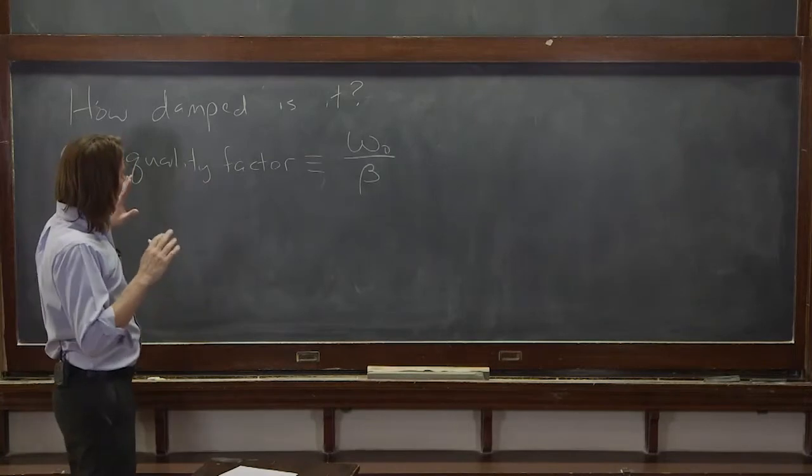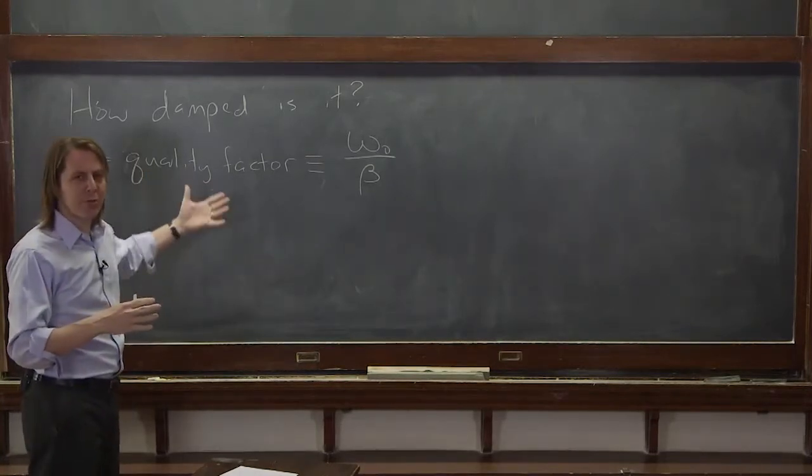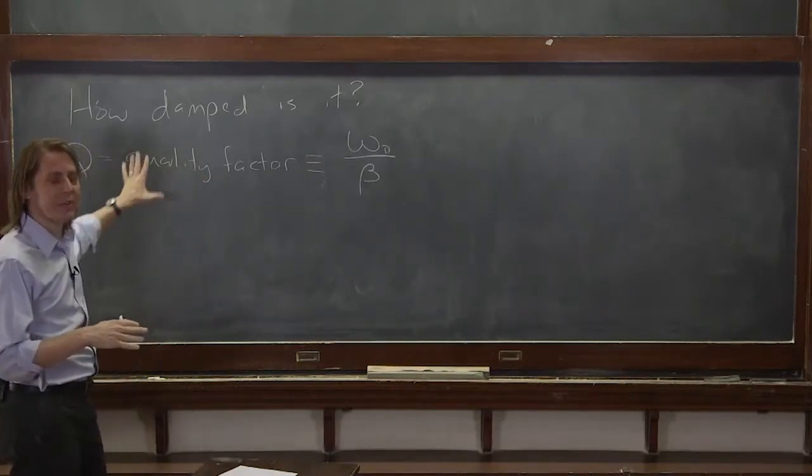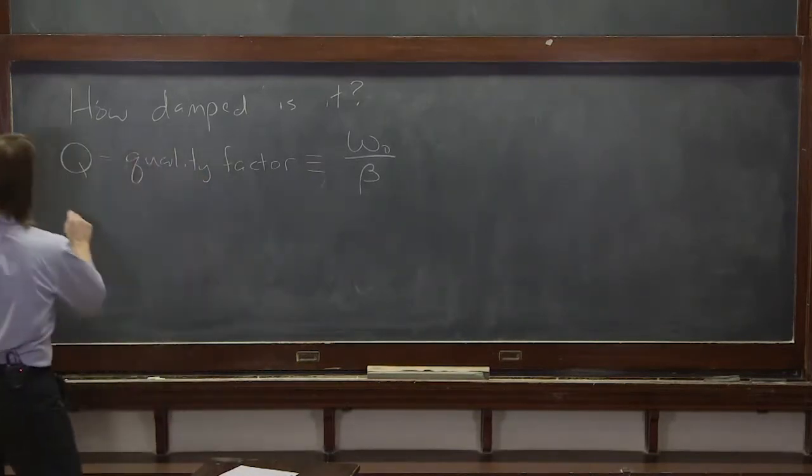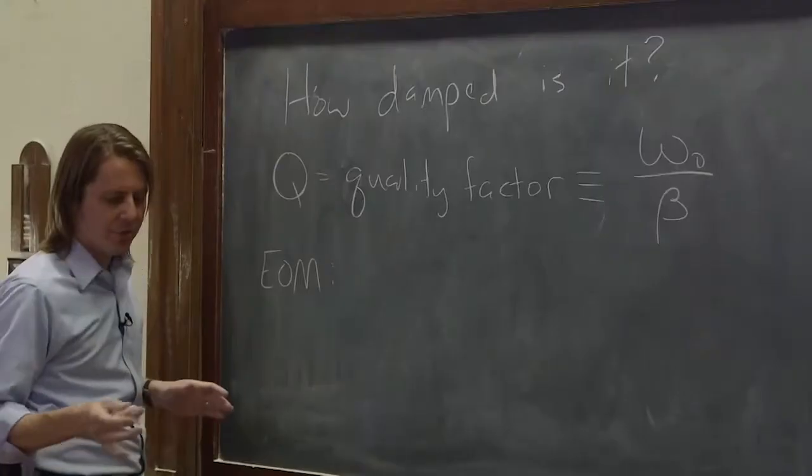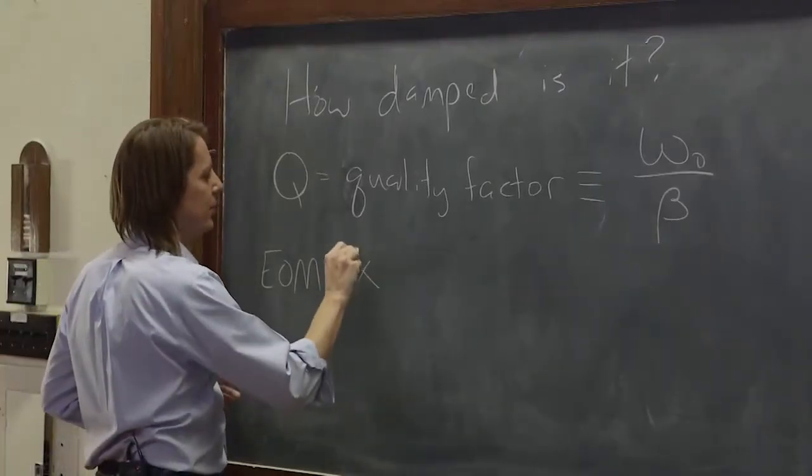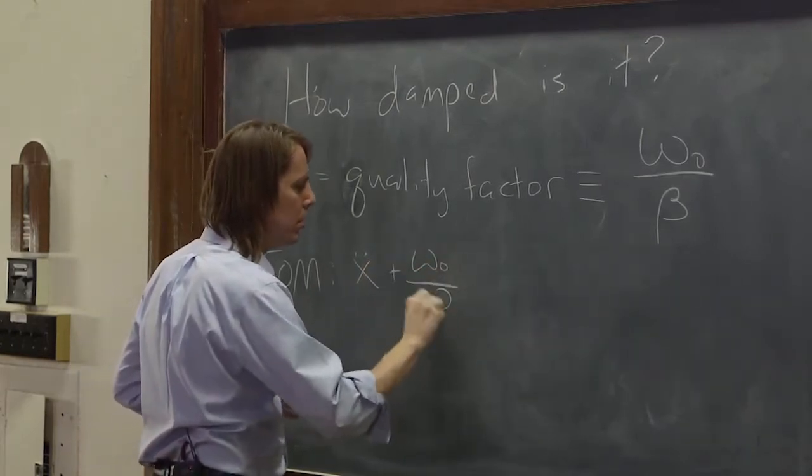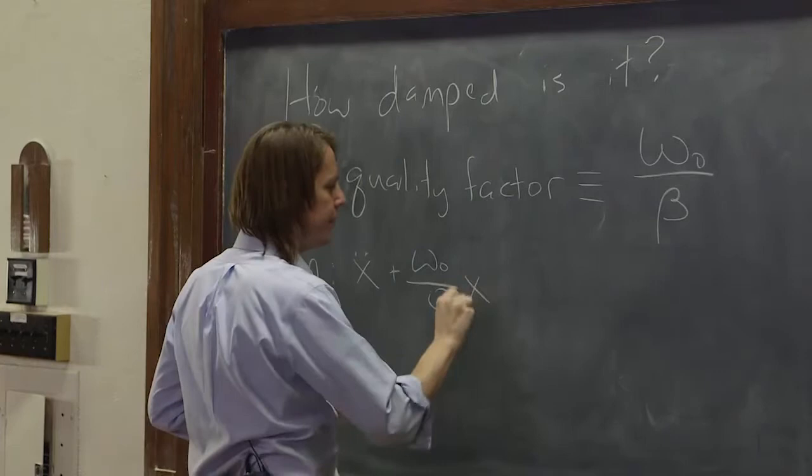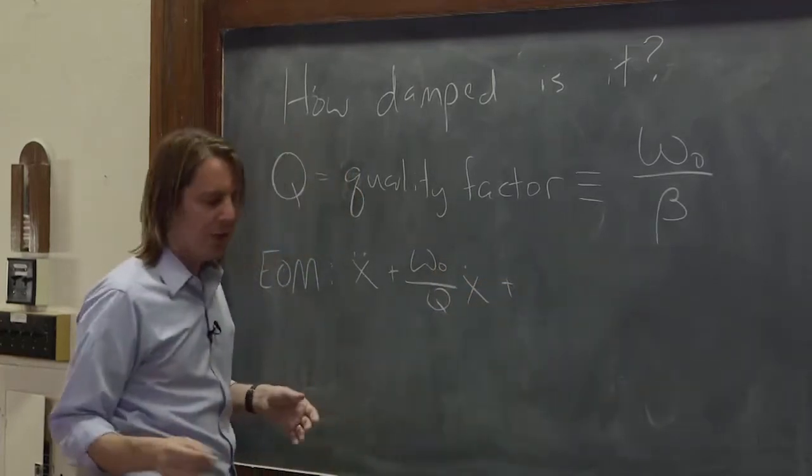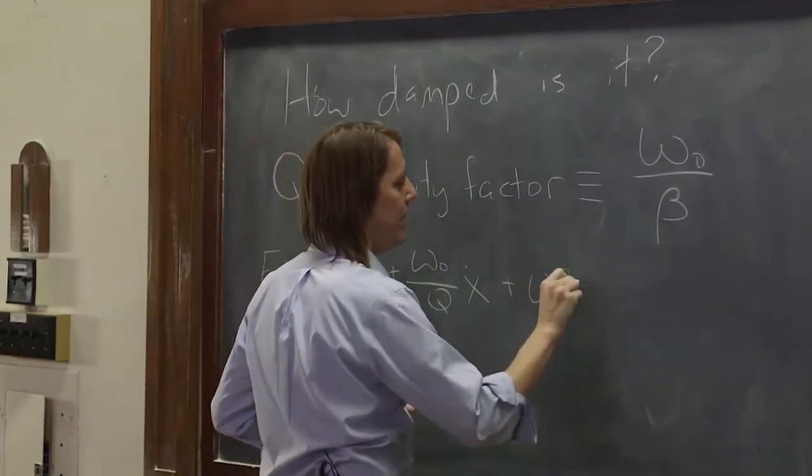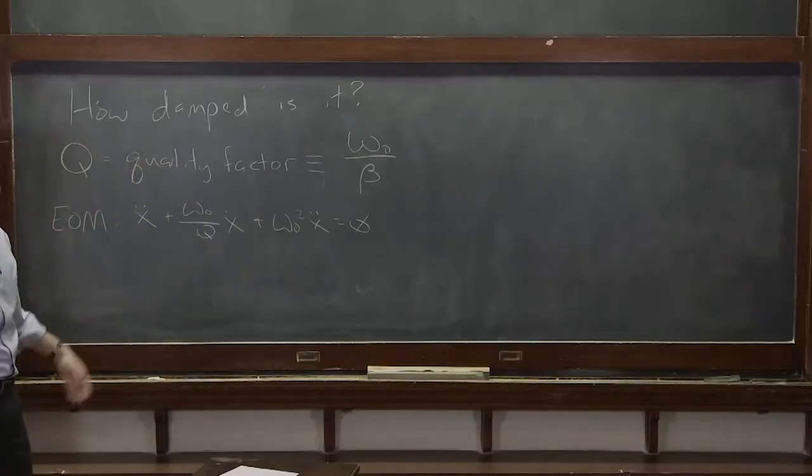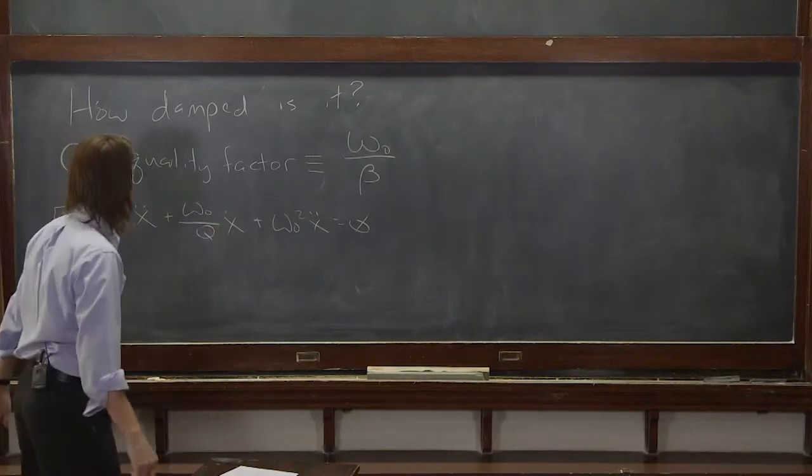So I'm not going to go through the details of the algebra, but basically you can rewrite our previous expressions using Q. And you'll often see it in books this way. The equation of motion for the damped oscillator using Q is x double dot plus omega naught over Q x dot plus omega naught squared x equals zero. So the one place we had a beta, we just switched it to a Q based on that definition.